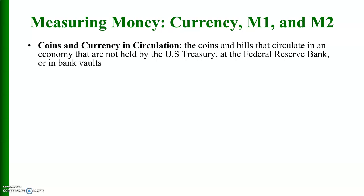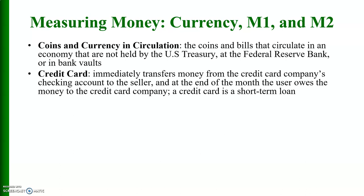Coins and currency in circulation are the coins and bills that circulate within the economy and are not held by the US Treasury or the Federal Reserve bank or in bank vaults. A credit card immediately transfers money from the credit card company's checking account to the seller, and at the end of the month the user owes the money to the credit card company. A credit card is essentially a short-term loan, widely used, with different commercial banks providing credit cards to customers as a medium of exchange.